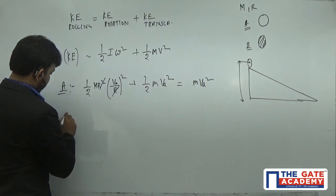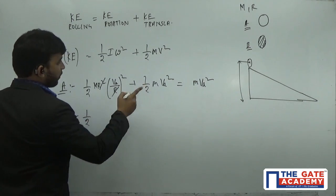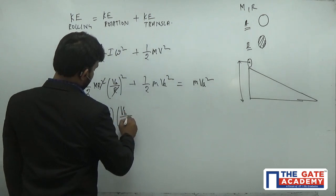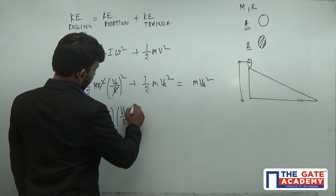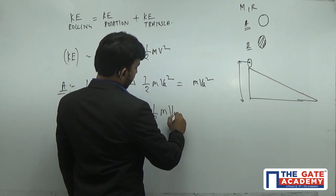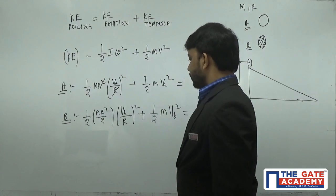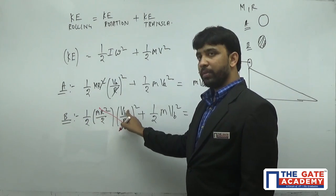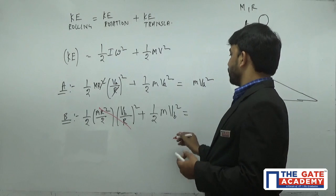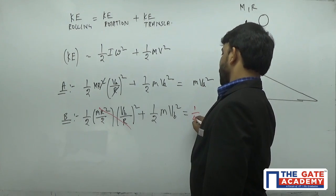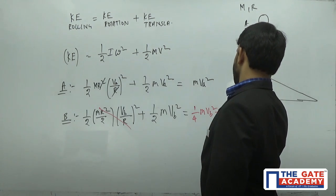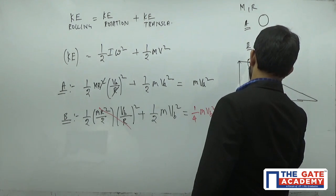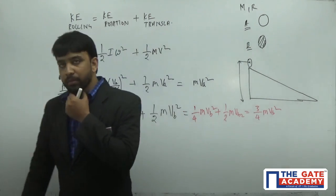For disk B, the moment of inertia I = MR²/2. The rotational KE is half times (MR²/2) times (V_B/R)², which gives (1/4) M V_B². Adding translational KE of half M V_B², the total kinetic energy for disk B is (1/4) M V_B² plus (1/2) M V_B², which equals (3/4) M V_B².